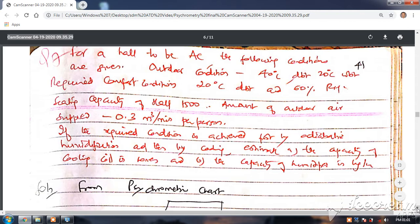Required comfort conditions inside: 20 degrees centigrade dry bulb and 60 percent relative humidity. Heating capacity of the hall is 1500. The amount of outdoor air supplied is 0.3 meter cube per minute per person.